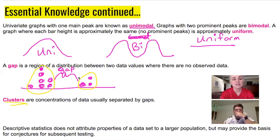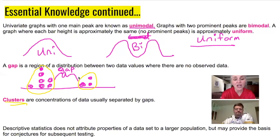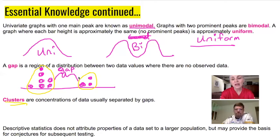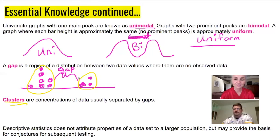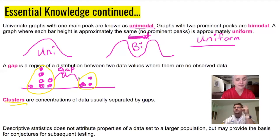Descriptive statistics does not attribute properties of a data set to a larger population, but may provide the basis for conjectures for subsequent testing. It's one thing to think something's going to happen or have a gut feeling — it's another thing to prove it or verify it statistically. In statistics we always want to talk about convincing evidence.